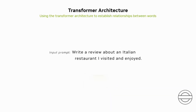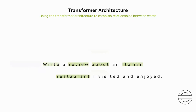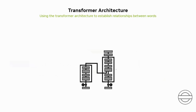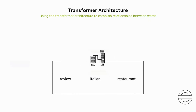LLMs are constructed based on tokens, which represent the smallest units of meaning in a language. Tokens encompass words, characters, subwords, or other symbols representing linguistic elements. The transformer model architecture empowers the LLM to comprehend and recognize relationships and connections between tokens and concepts using a self-attention mechanism. This mechanism assigns a score, commonly referred to as a weight, to a given item or token to determine the relationship.